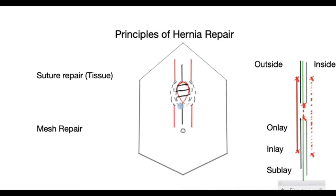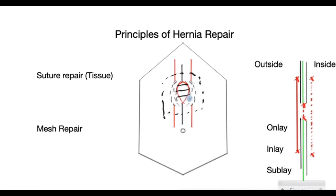The other method is the mesh repair, where a synthetic material — or more recently, biological material — is used to cover the defect. A mesh is placed covering and reinforcing the entire area around the hernia so that it doesn't recur. The mesh frequently incites scar tissue to form, further preventing recurrence. All hernias are stitched prior to application of the mesh.